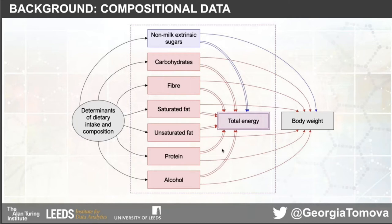For example, with an exposure of non-milk extrinsic sugars and an outcome of body weight, if we adjust for total energy we can think of this as fixing a value so it's constant. If we increase the intake of sugars by 200 calories, because total energy is fixed we have to decrease the other components by 200 calories — which is why this represents a substitution. This doesn't happen when we adjust for residual energy intake.